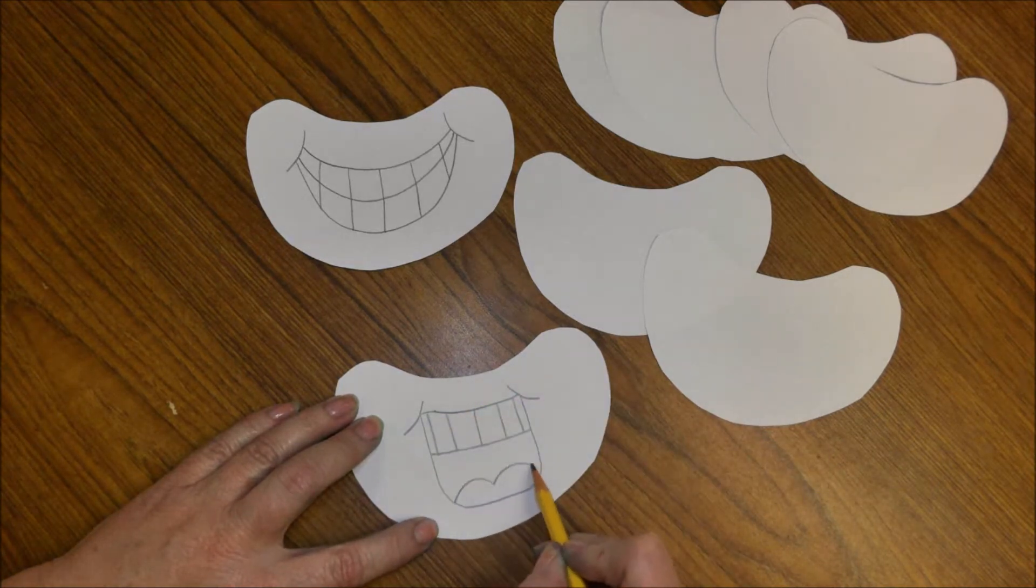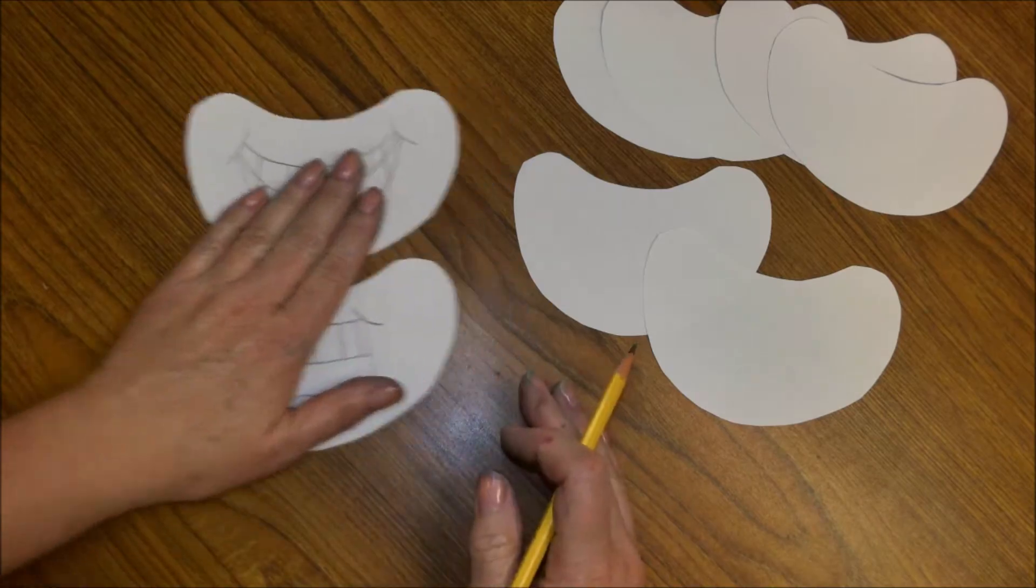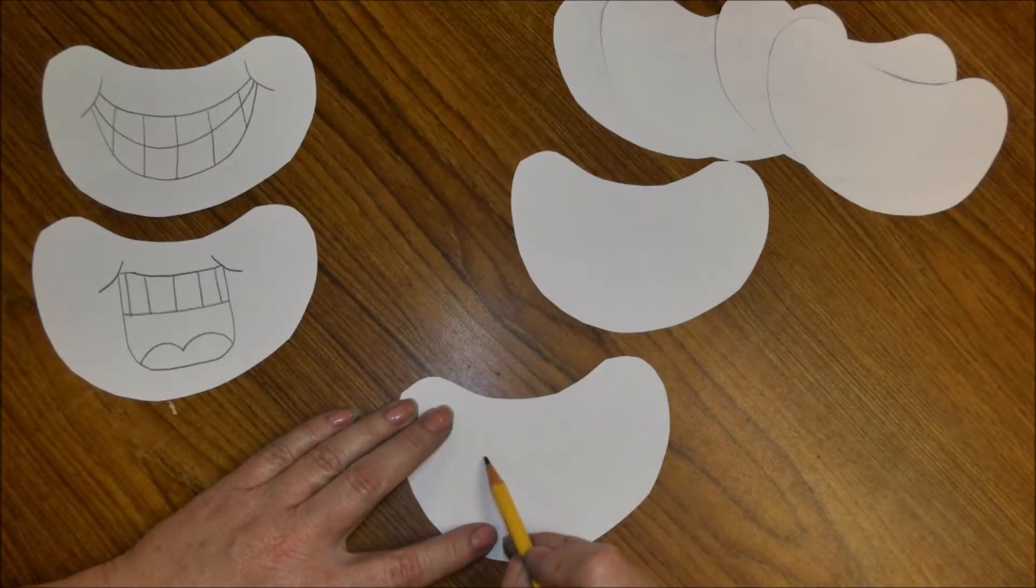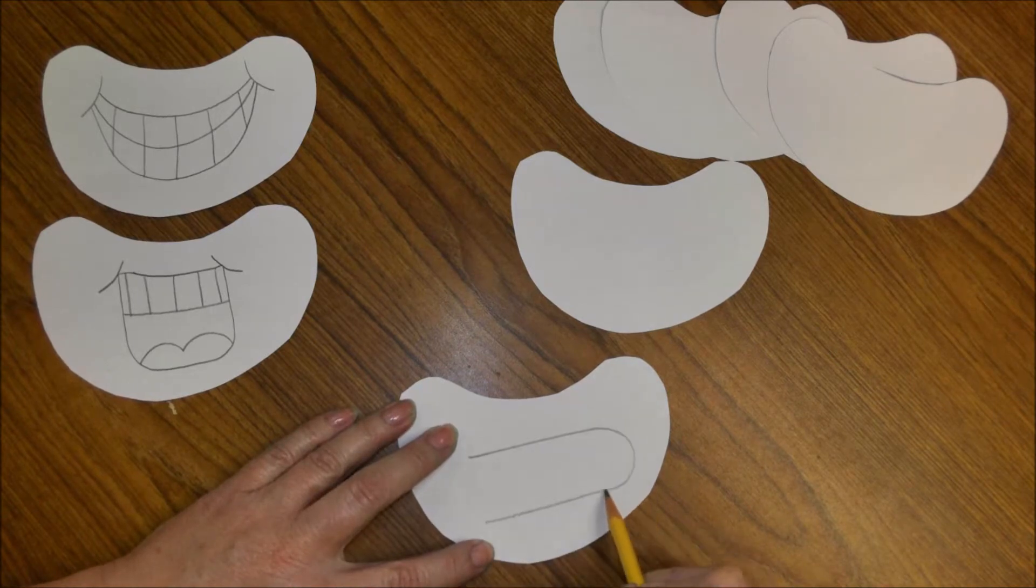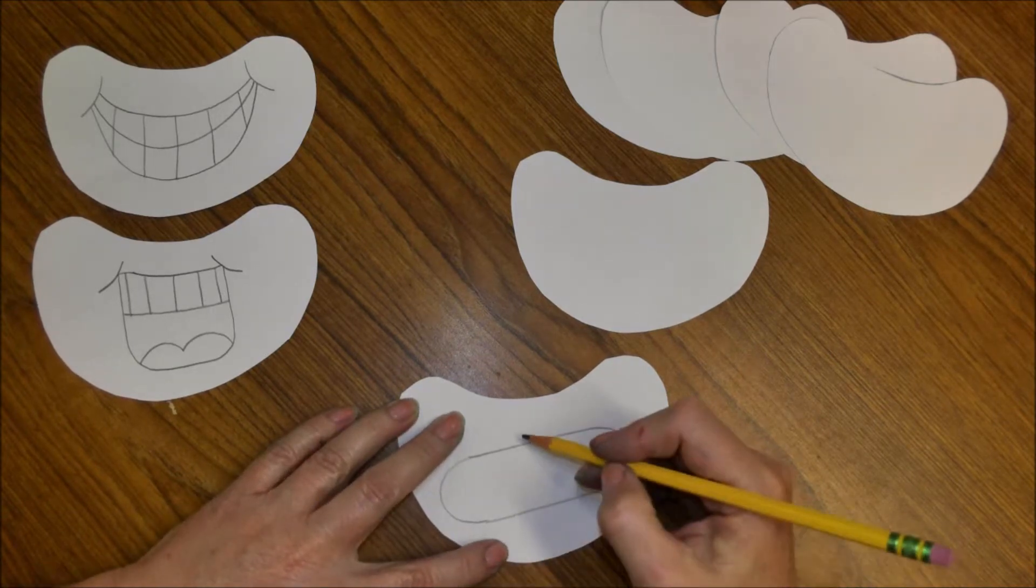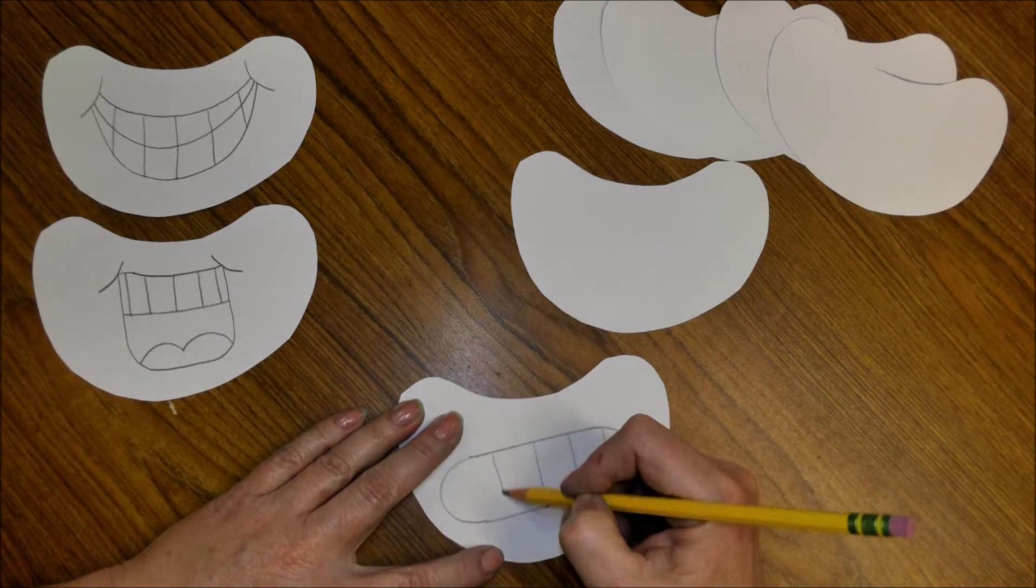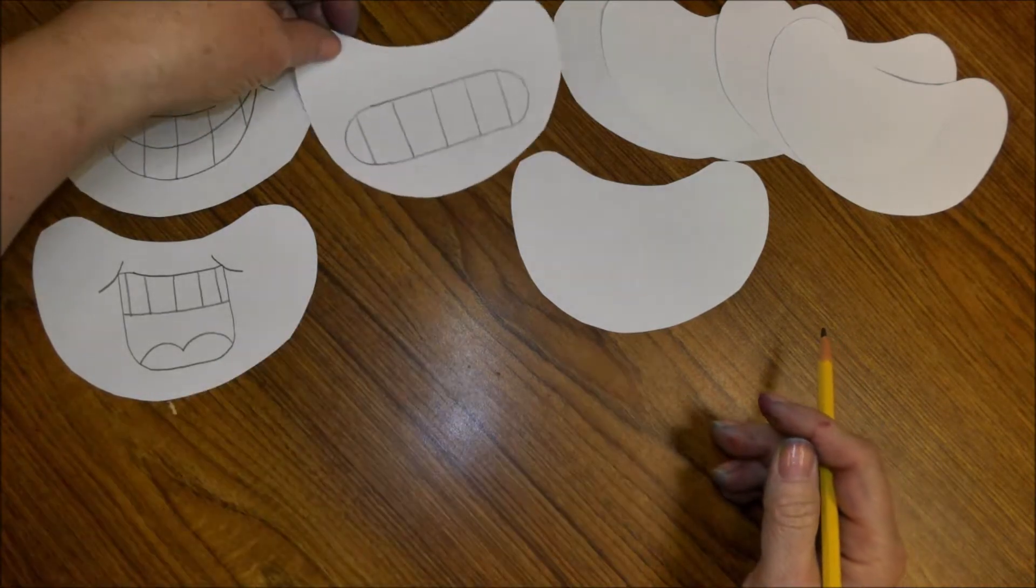Now we're going to do the anxious emoji, which also means nervous. Draw two parallel lines, connect them with curves on the sides, draw lines for the teeth. Later you'll see I also add a line in the middle going across to separate the teeth.